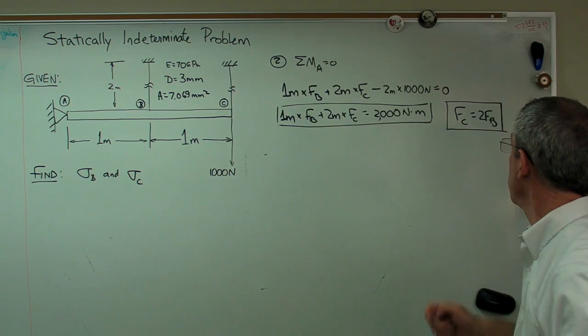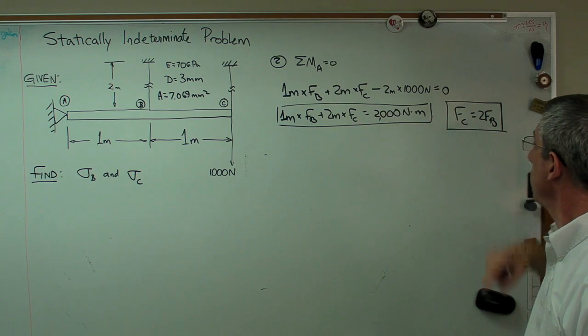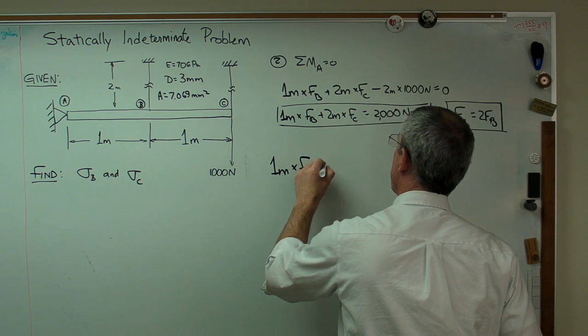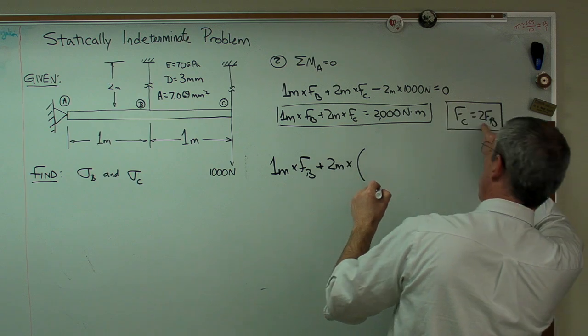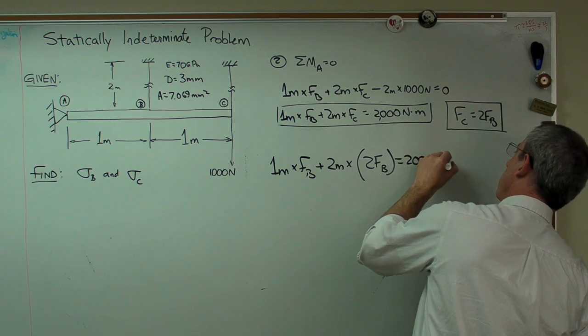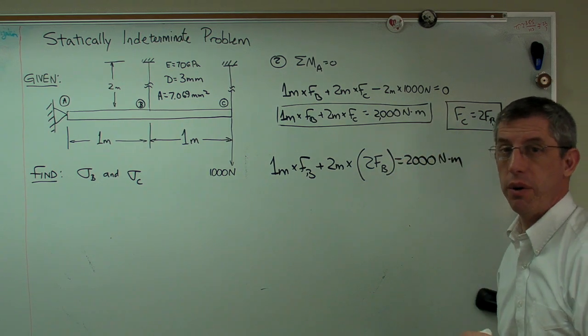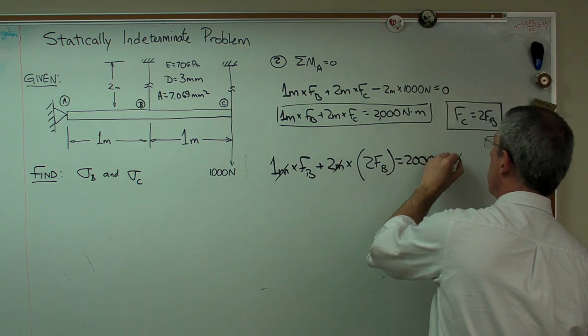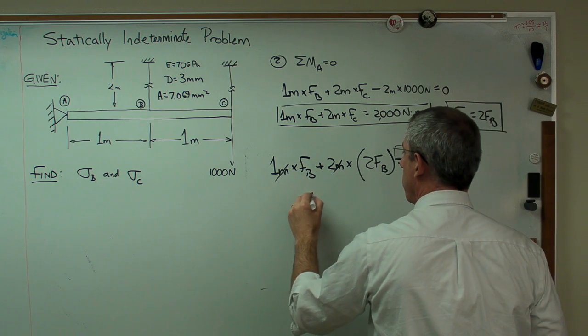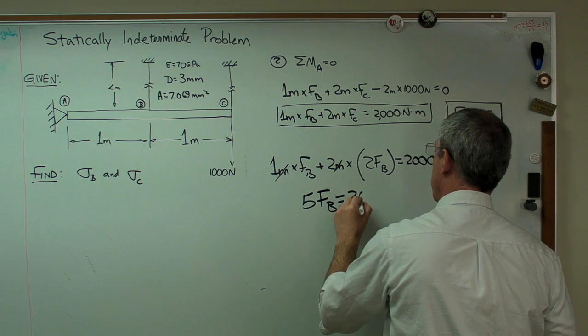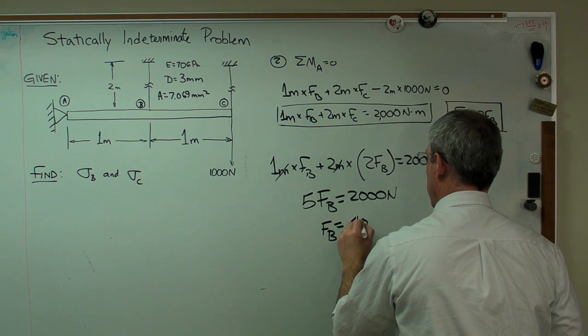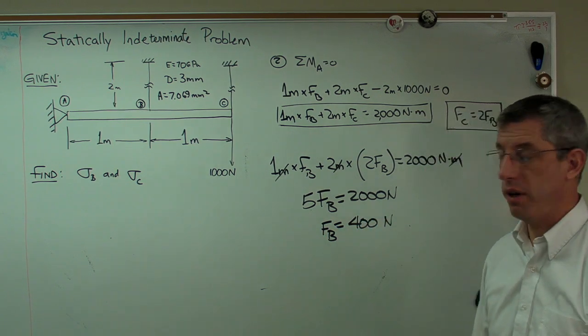Now it's time for just a little bit of algebra. Anywhere I see Fc, I'm going to write 2Fb. So, one meter times Fb plus two meters times 2Fb equals 2,000 newton meters. The units can cancel out, so I'm going to cancel out the meters and be left only with newtons. One Fb plus four Fb is going to make five Fb is 2,000 newtons. So, Fb is 400 newtons.